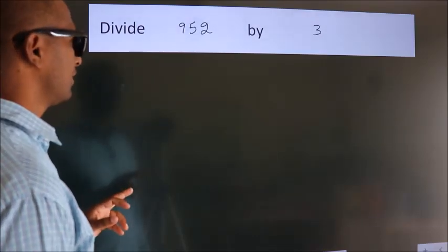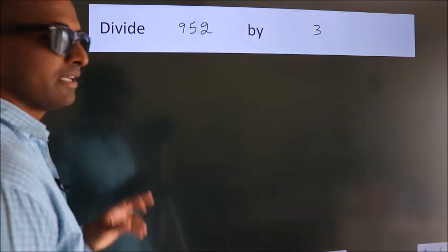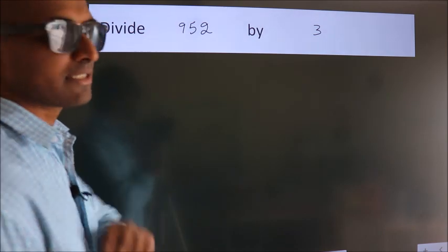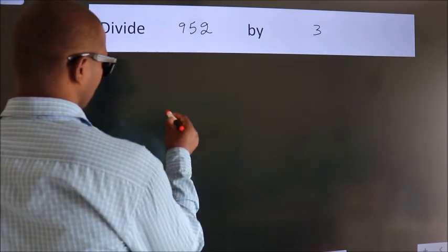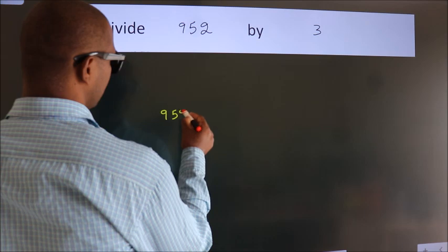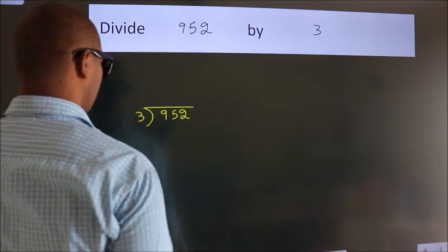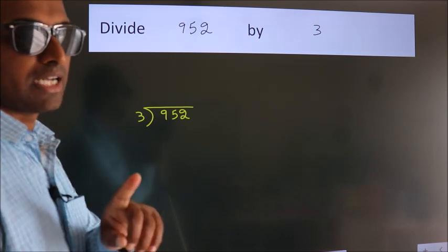Divide 952 by 3. To do this division, we should frame it in this way. 952 here, 3 here. This is your step 1.